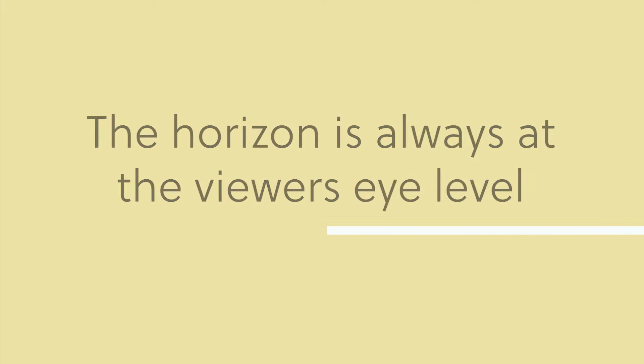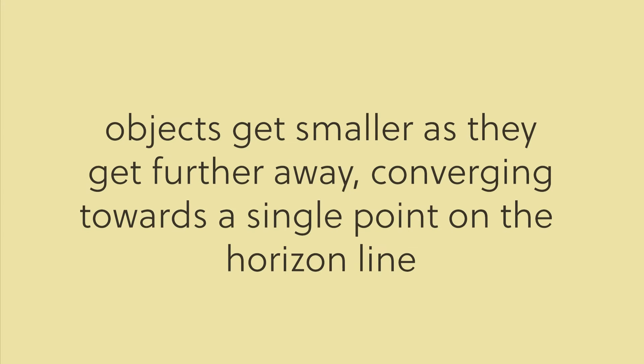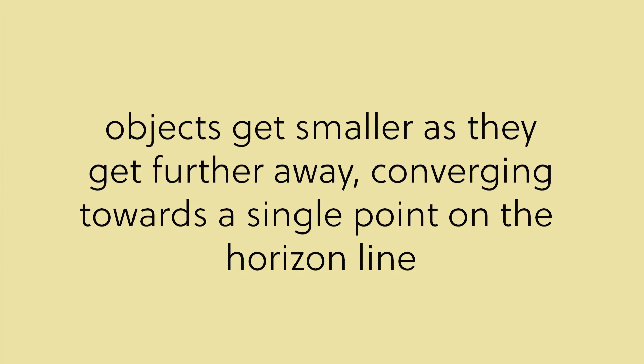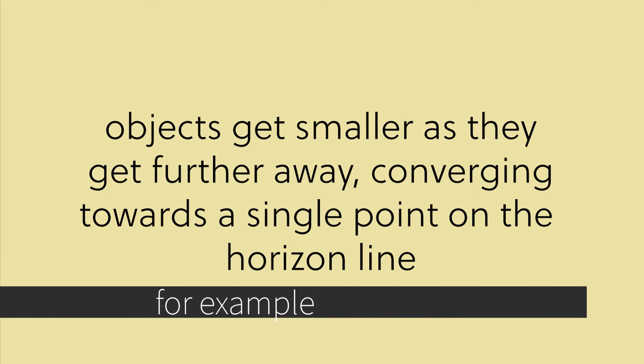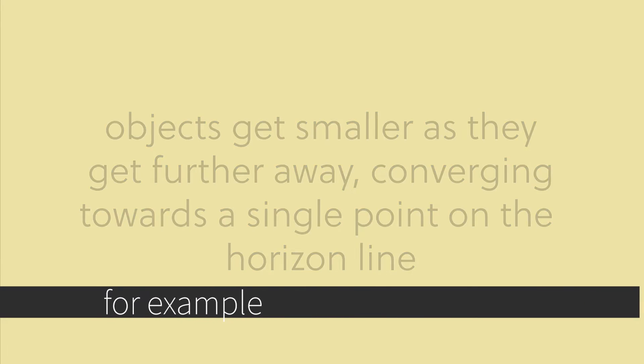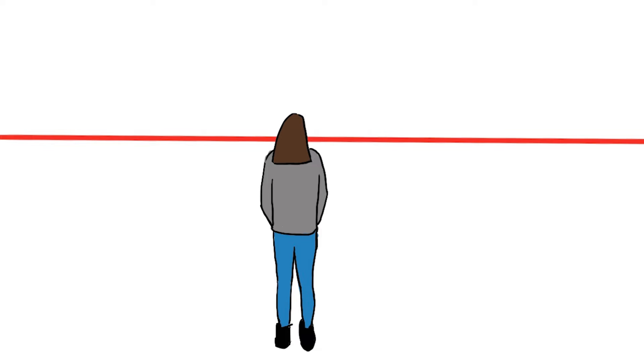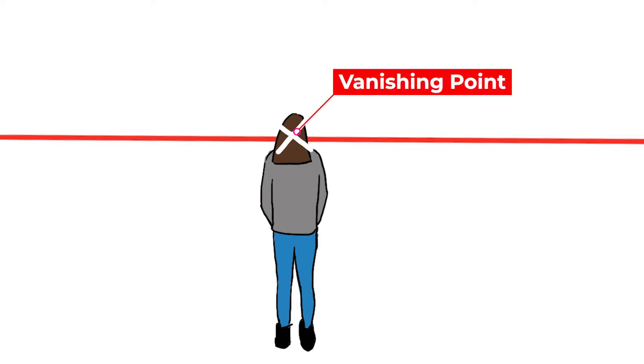Starting with one-point perspective, objects will get smaller as they get further away and converge on a single point on the horizon line. We call this single point the vanishing point.